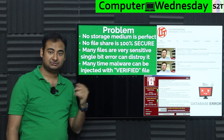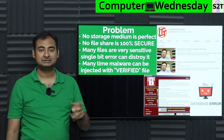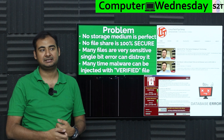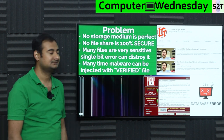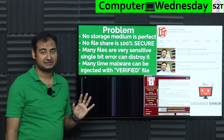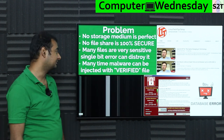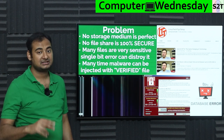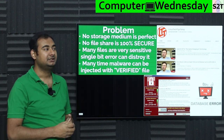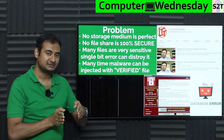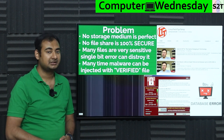Even though the file looks huge — video files, for example — if you have a very specific bit going wrong, a giant video file could just become unplayable, even with as little as a few bits of error. Many files are very sensitive, especially encrypted files. A single bit error can just poof them out of existence. And many malwares can be injected.